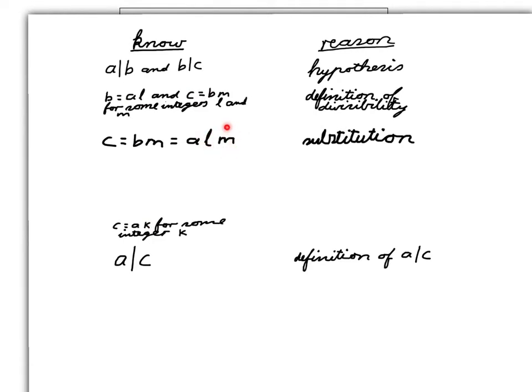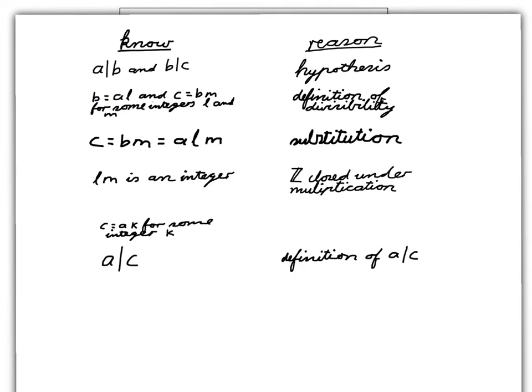Well, it is an integer because the product of any two integers is an integer. We refer to that as the closure property under multiplication of the integers. So now I can fill in this step here. The reason for this is just simply the substitution of K for L times M. So this is just simply substitution.